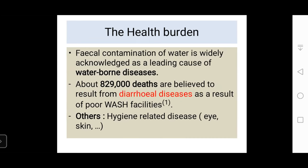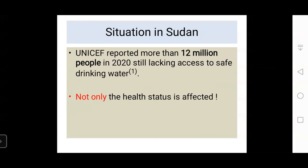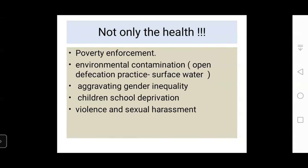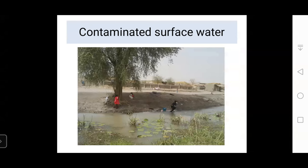More than 800 million people lack basic drinking water services, more than 2 billion lack access to basic sanitation, and 3 billion people have poor hygiene practices. The burden of these aspects affects health through waterborne diseases like diarrheal diseases, with more than 800,000 deaths per year. In Sudan specifically, more than 12 million people lack access to safe drinking water. The aspects of WASH not only affect health, but also economical status, environmental contamination, gender equality, children's school deprivation, and violence and sexual harassment.